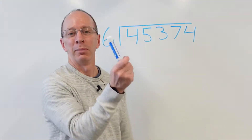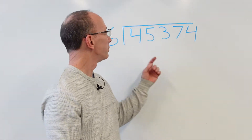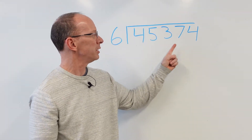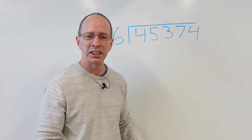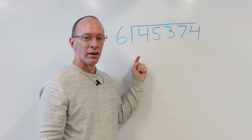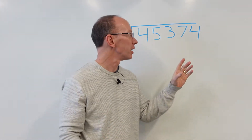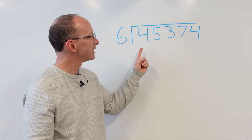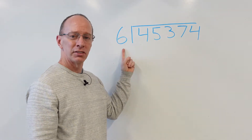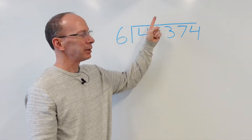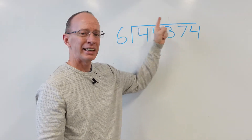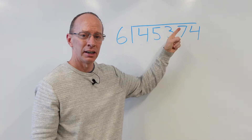Hey, welcome back to the show. Today in the show, we are going to be dividing a 1, 2, 3, 4, 5-digit number by a 1-digit number. Before we get started, remember this is the dividend. This is called the divisor, and you're going to be putting your answer right here — your quotient — up in this area.